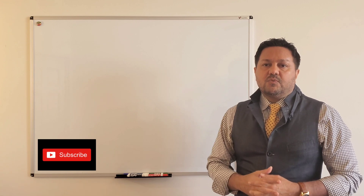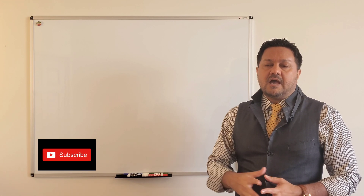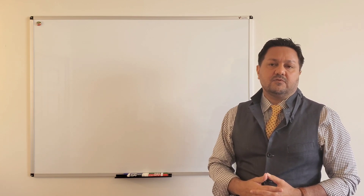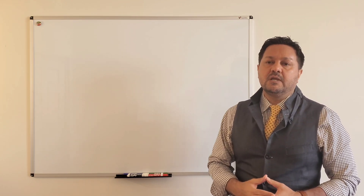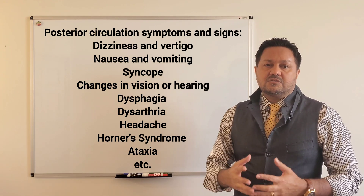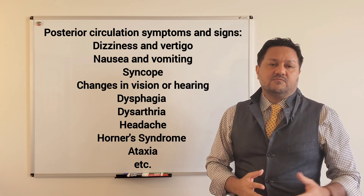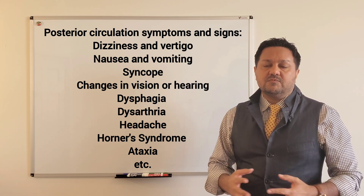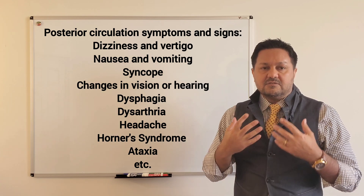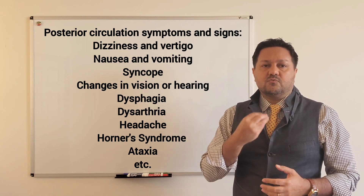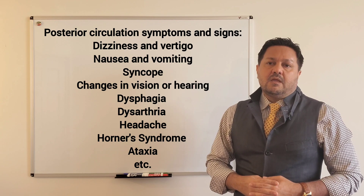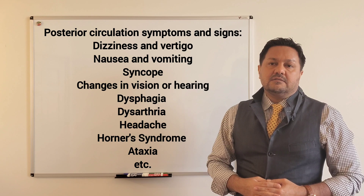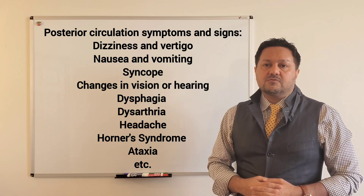The presentation of Bowhunter syndrome includes any symptoms caused by insufficiency of blood flow to the posterior circulation. These commonly include vertigo or dizziness, nausea, sometimes vomiting, dysarthria, difficulty with swallowing or dysphagia, difficulty with vision, changes in hearing, and syncopal episodes.